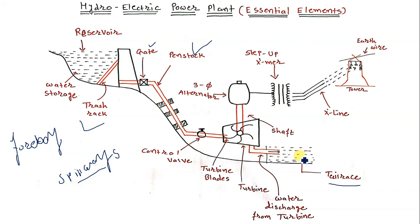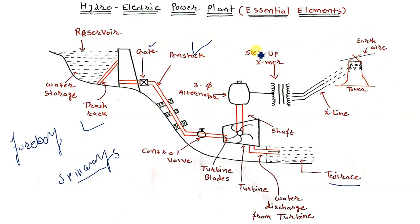There are also other elements such as the alternator, step-up transformer, transmission line, and towers. However, when discussing only the essential hydroelectric power plant equipment we do not need extended discussion on those elements. There is also a control mechanism used to control the inlet water to the turbine blades.